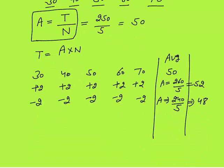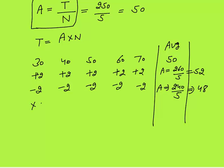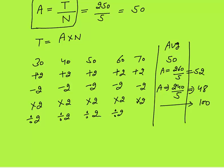Next, if each number is multiplied by 2, the average will also become double because total will now become 500 and average will become 100. Same way, if each number is divided by 2, your average will also be divided by 2, as total will become 125 and average will become 25.